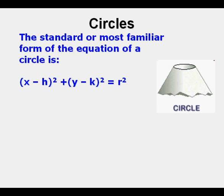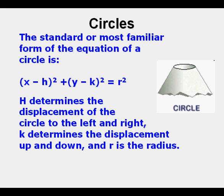The standard or most familiar form of the equation of a circle is quantity x minus h squared plus quantity y minus k squared equals r squared. h determines the displacement of the circle to the left and right, k determines the displacement up and down, and r is the radius.